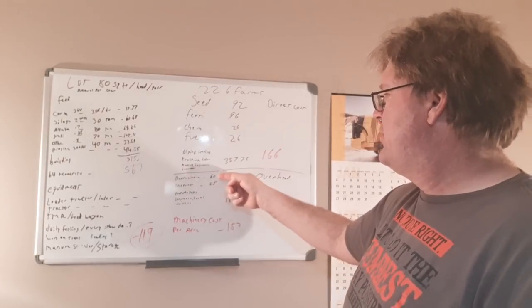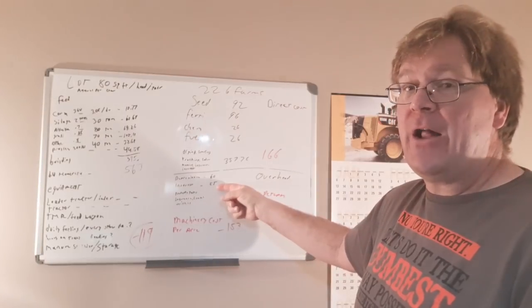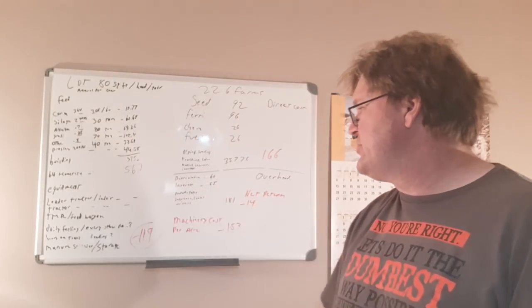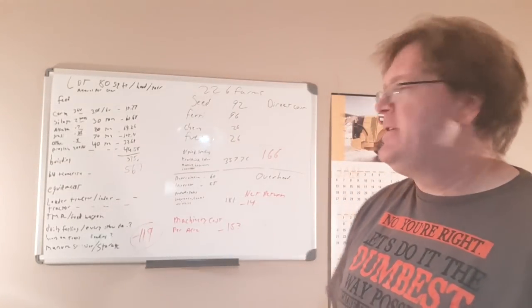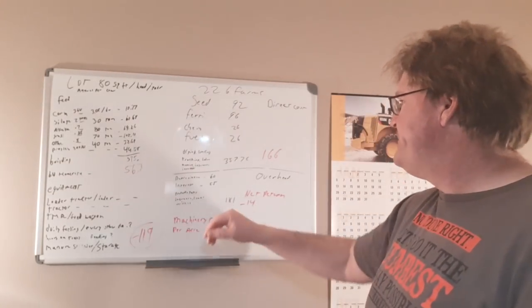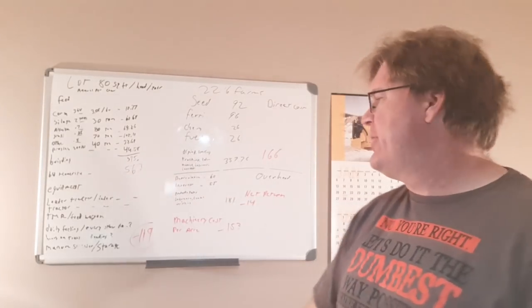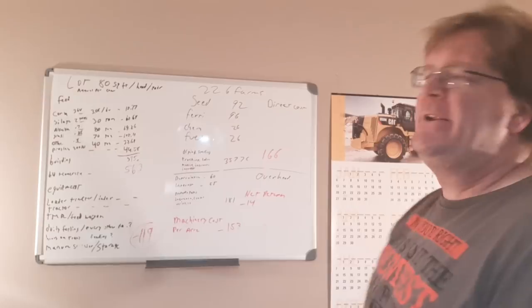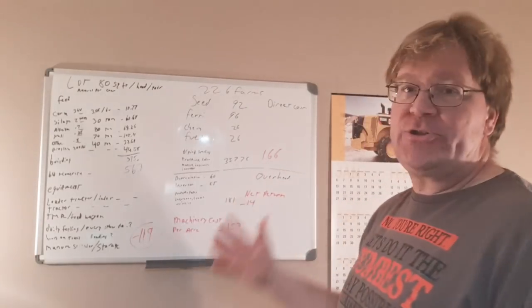When we get into our depreciation of $60, interest of $55 per acre, your property taxes, your insurances, equipment leases, utilities, all that other stuff comes up to another $180 an acre, which gives us the minus $14. So that's conventional corn.